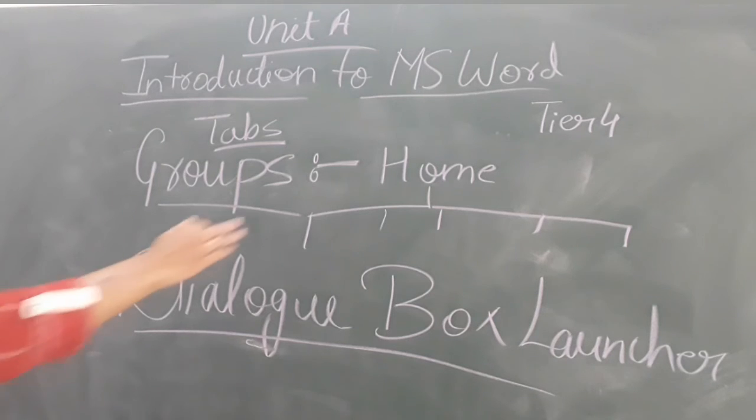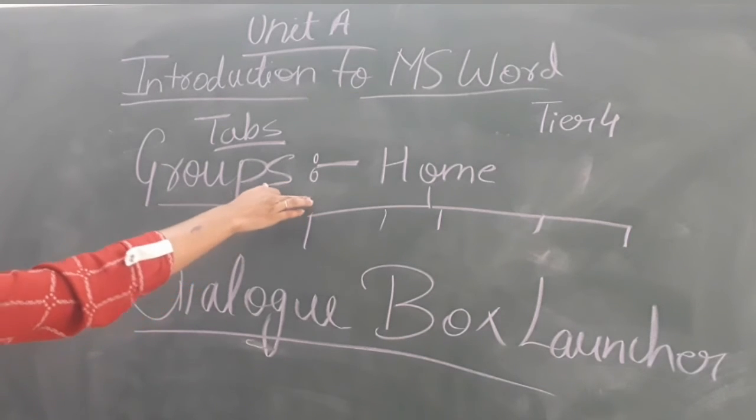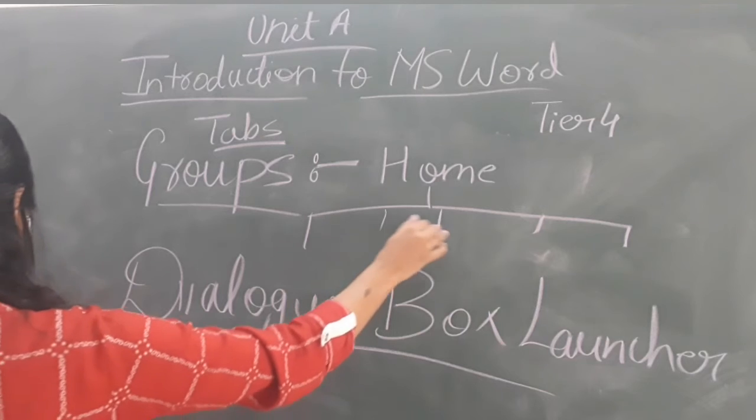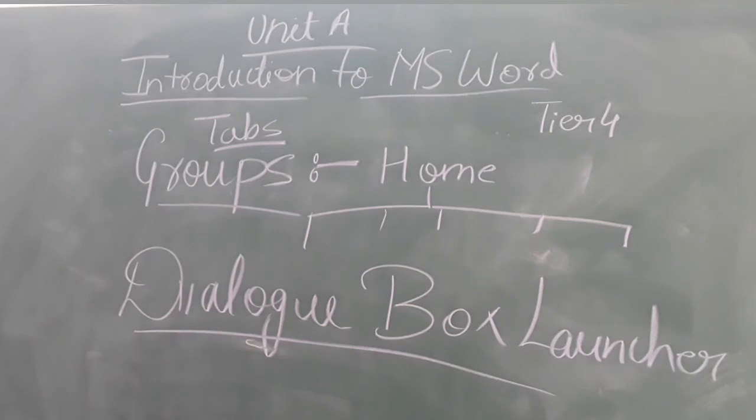So what is, in under Home tab, what are the options? There are Clipboard, Font, Paragraph, Styles, and Editing.